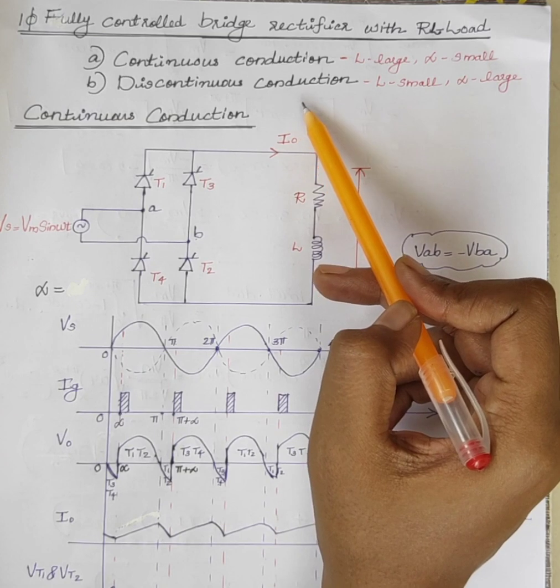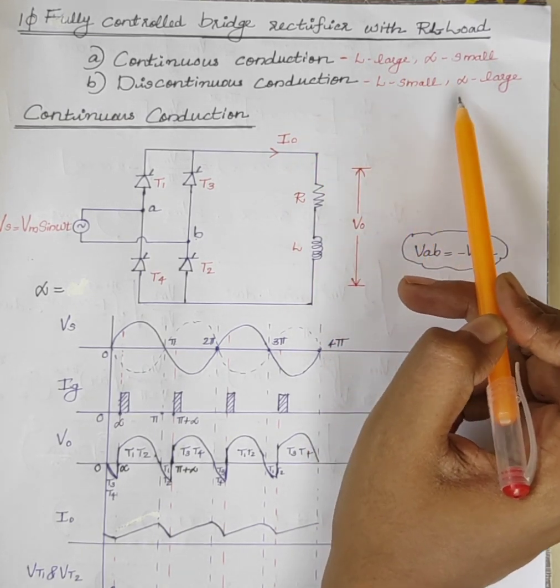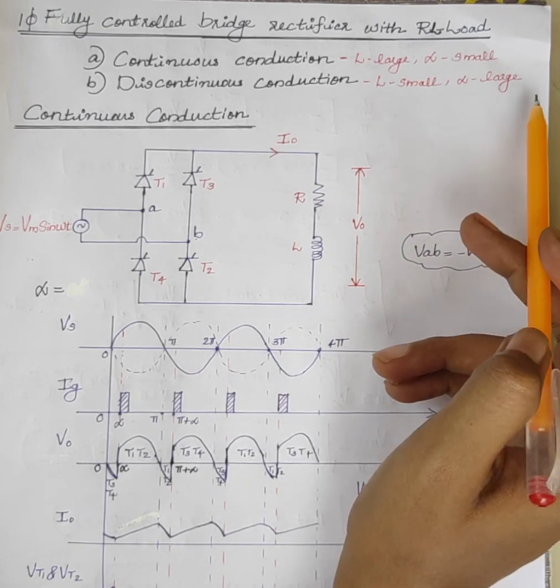In discontinuous conduction mode, inductance value is small and the firing angle alpha is large.